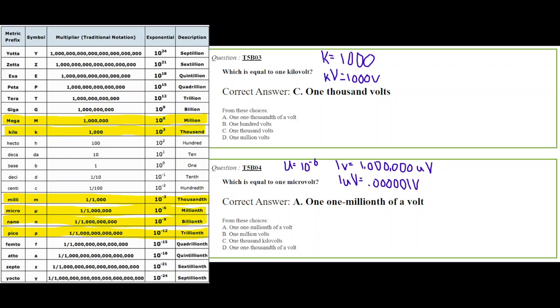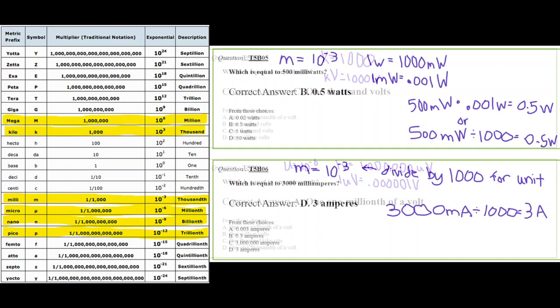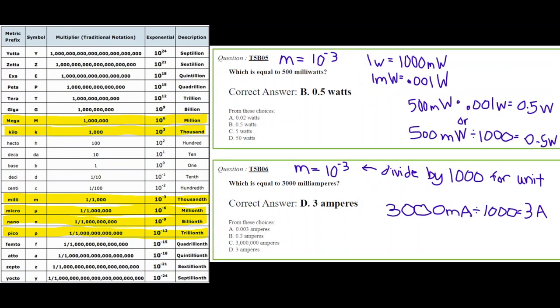All righty. So let's go to question number five and six. Looking at this question, it says, which is equal to 500 milliwatts? Now, milli says divide by 1,000. If you look at the chart, it says in the very center, milli, divide by 1,000. So if you want to convert to watts, divide by 1,000. I've done it both ways. I multiplied times 0.001 watts, gives you a half a watt. Or 500 milliwatts divided by 1,000 is also 0.5 watts. And that is your answer.